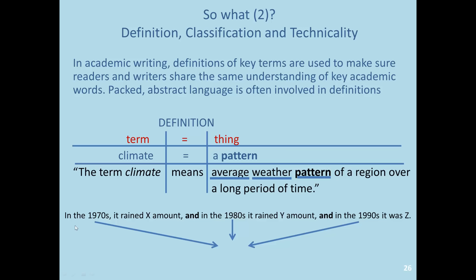If we look at a possible unpacked version of 'average weather pattern,' we could say: in the 1970s it rained x amount, in the 1980s it rained y amount, and in the 1990s the amount was z. We see many conjunctions joining many short sentences together, and this can be packed into one noun group called an average weather pattern.